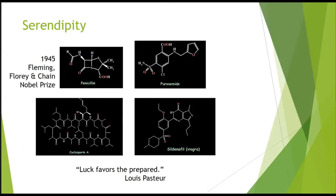There are many examples of drugs discovered by serendipity. Starting with the most popular: penicillin, a drug which saved millions of lives during the Second World War and for which Fleming, Florey, and Chain received a Nobel Prize in 1945. Furosemide, the first diuretic, was also discovered by serendipity. Cyclosporine was being tested as an anti-tubercular antibiotic but became the first immunosuppressive drug that changed organ transplantation. And sildenafil — Viagra — was being developed as an antihypertensive drug but became one of the best-selling drugs ever, leading to an entirely new pharmacological group.